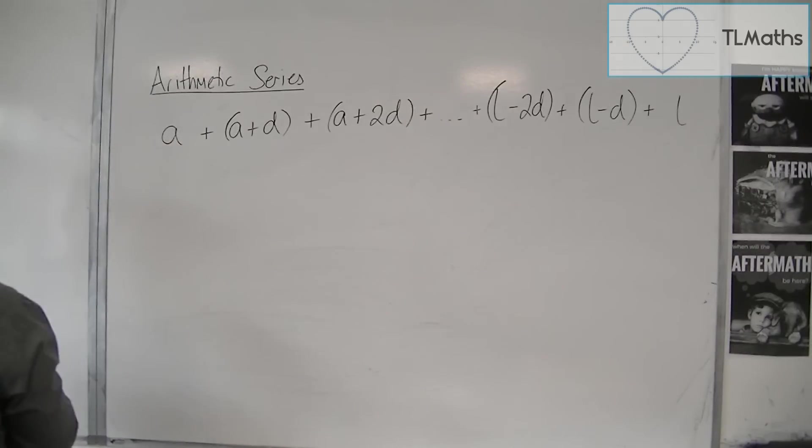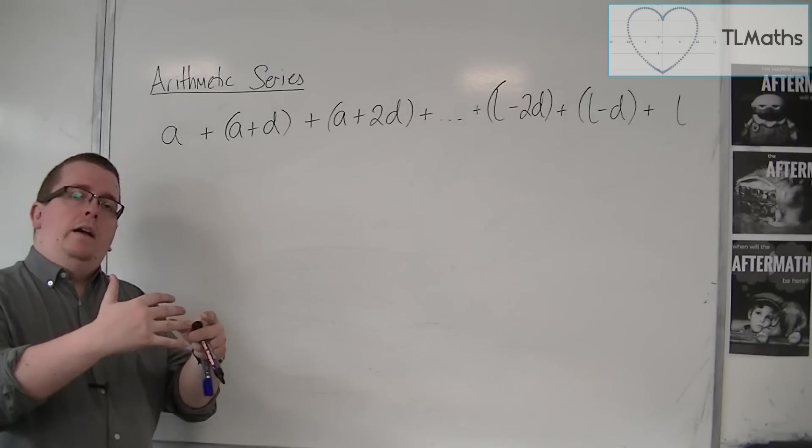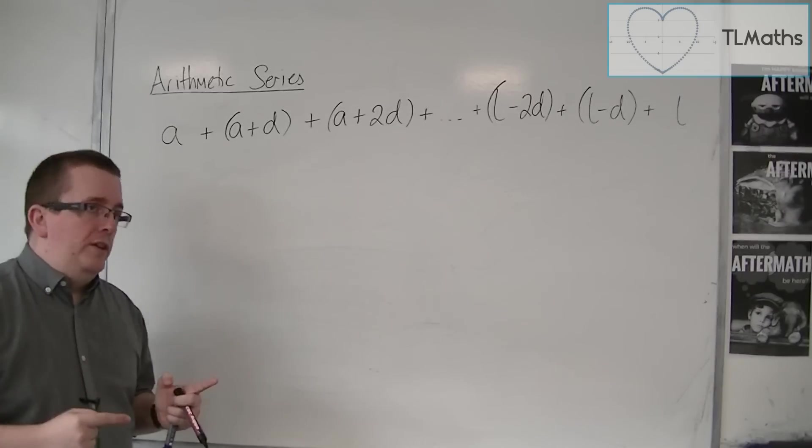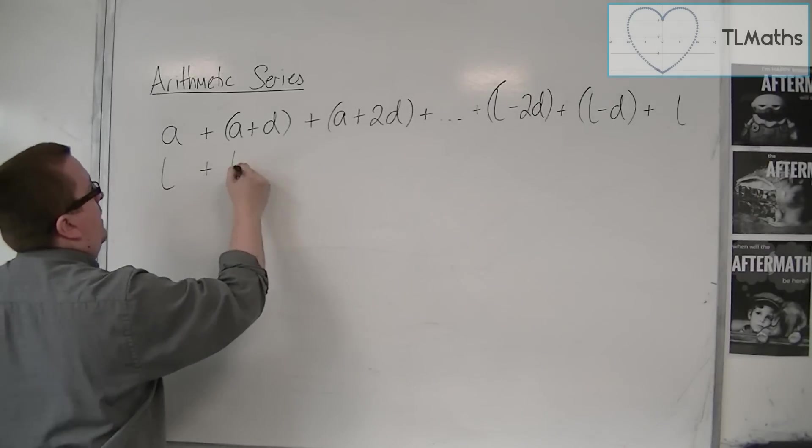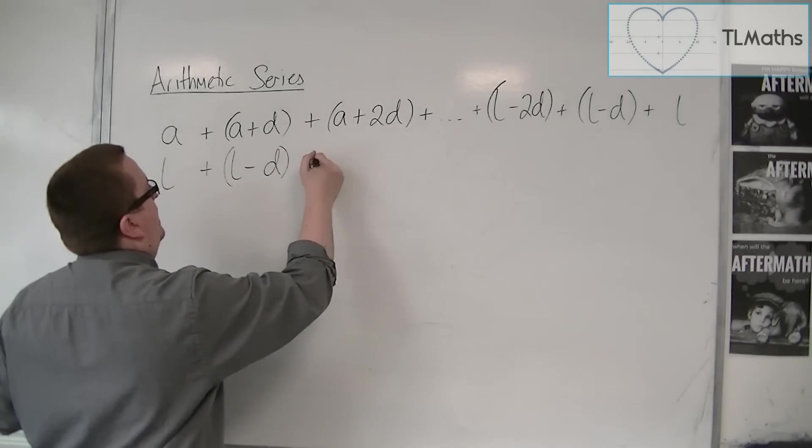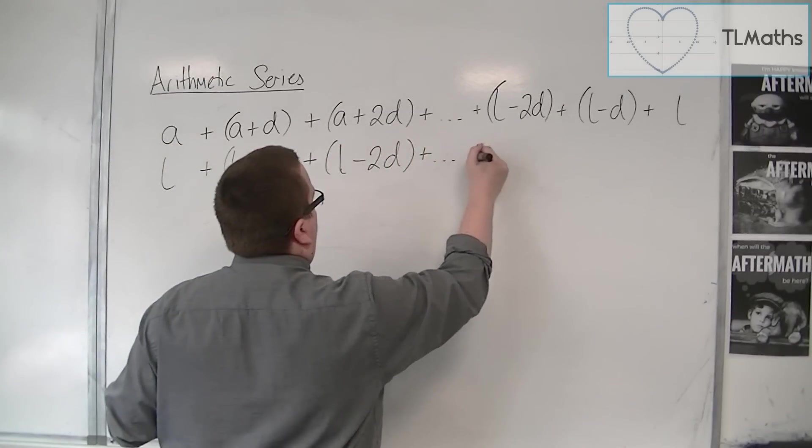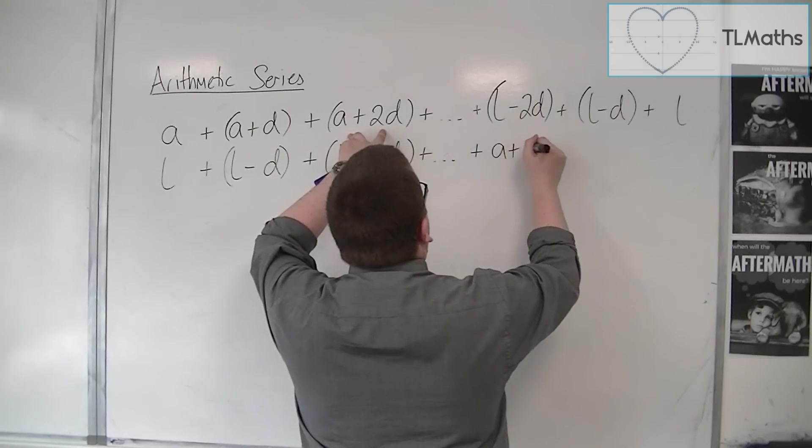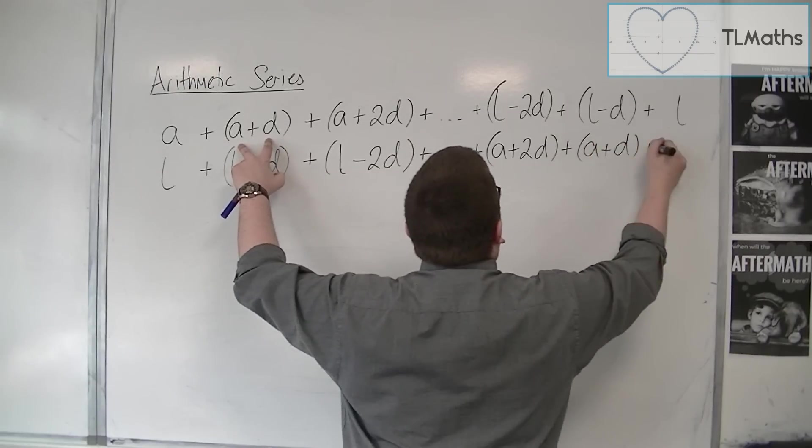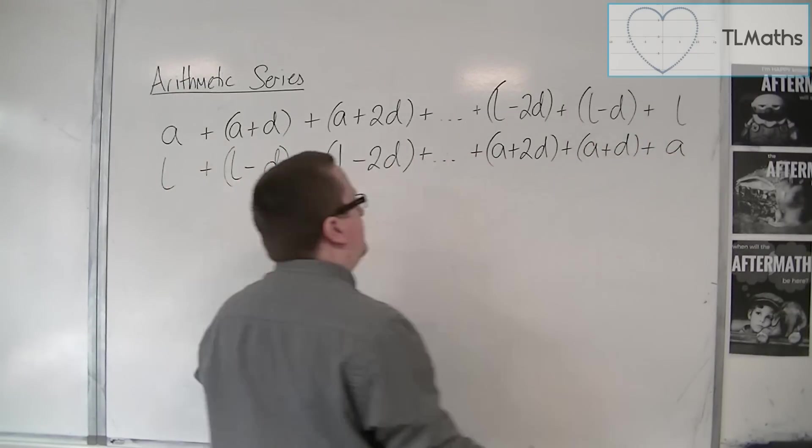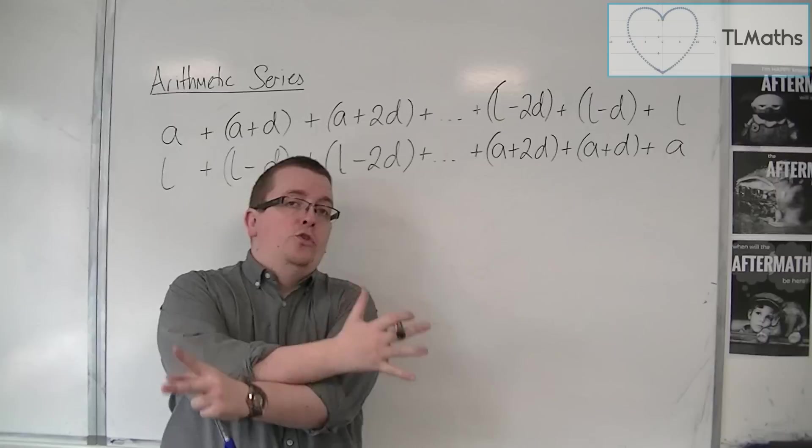If I then write underneath exactly the same series but in reverse order, then what I have would be L, and then I would have L minus d, and then I would have L minus 2d, and so on. Then I would have a plus 2d, and then I would have a plus d, and then finally I would have a. All I've done is written out exactly the same series in reversed order.